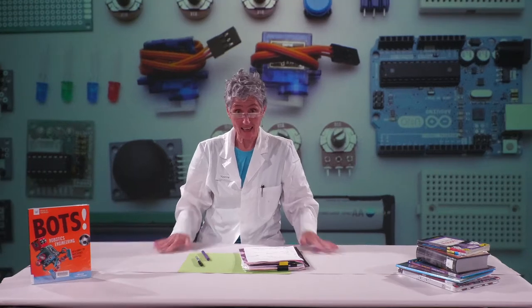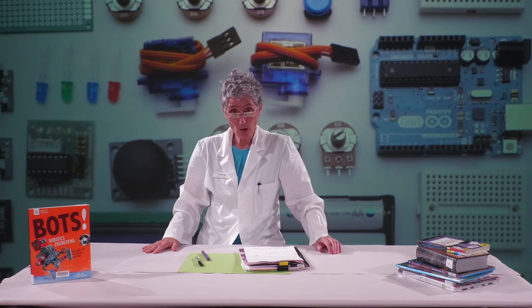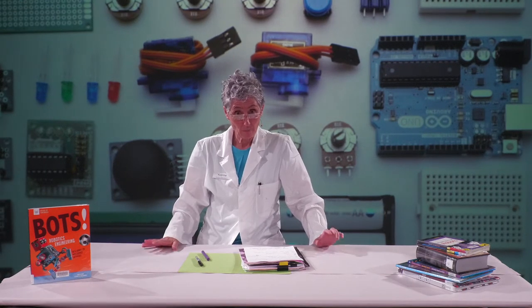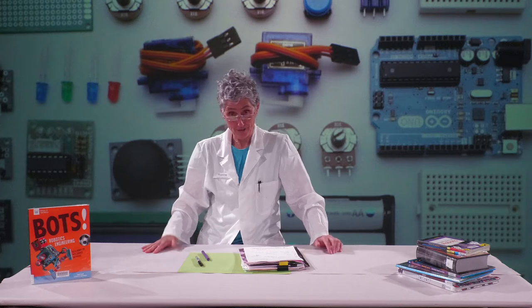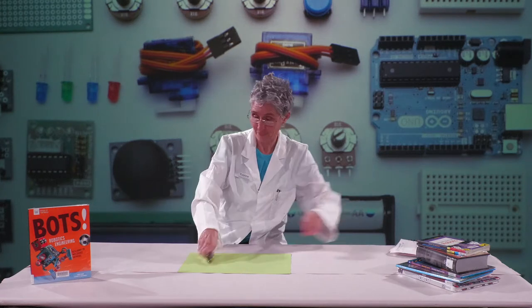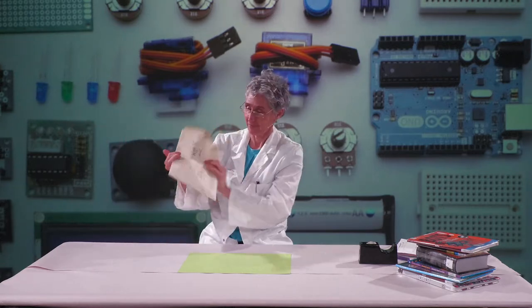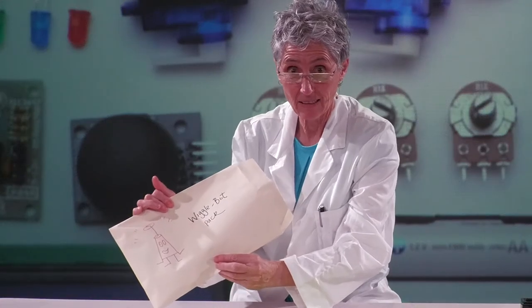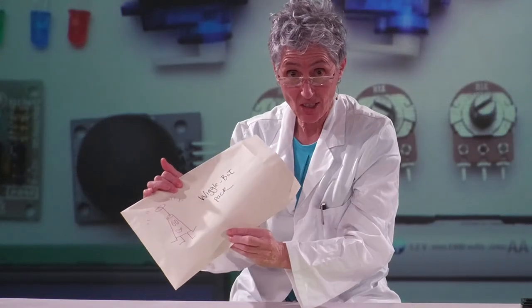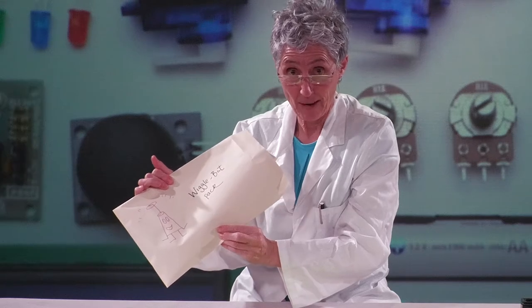First thing you need is a clear working space. So if you're using the kitchen or dining room table, promise that you'll clear up after yourself. Then you'll need your WiggleBot pack that you've collected from the branch that you selected when you registered on Eventbrite.